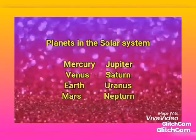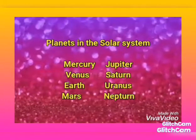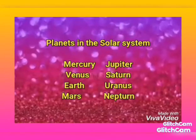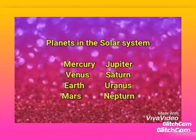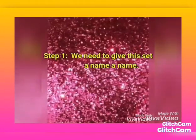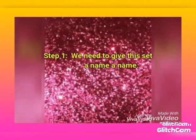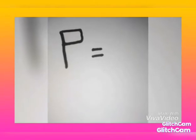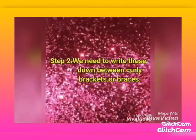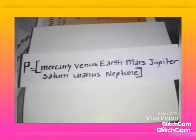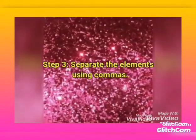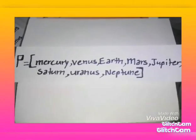Let's list the planets in the solar system: Mercury, Venus, Earth, Mars, Jupiter, Saturn, Uranus, and Neptune. Now I'll be writing these in a set. First, we need to give the set a name, and we know that a set is denoted by a capital letter. So, because these are planets, let's call it set B. Next, we write these down between curly brackets, as you can see on the screen. Finally, we separate them using commas, as shown on the screen.